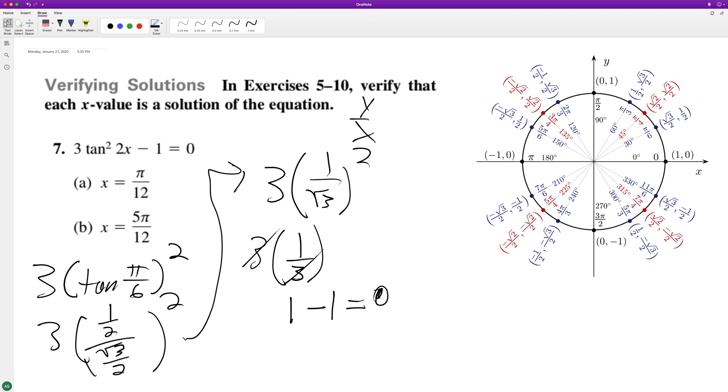So that's how you do that. And then next up, 5 pi over 12, the double angle is 10 pi over 12, and that simplifies down to 5 pi over 6, which is right here. So it's similar, except...